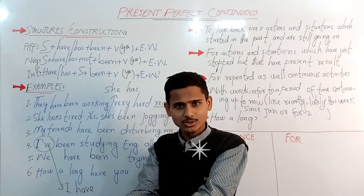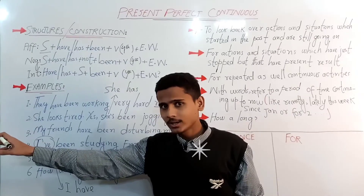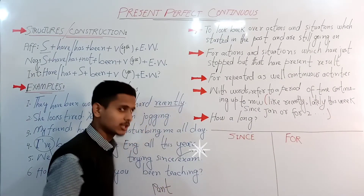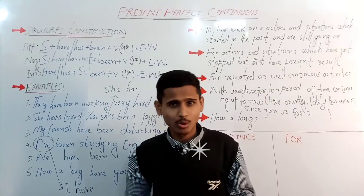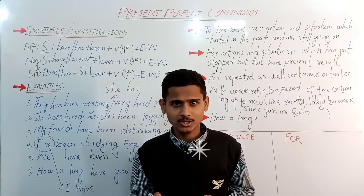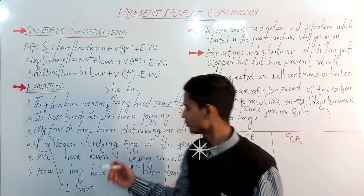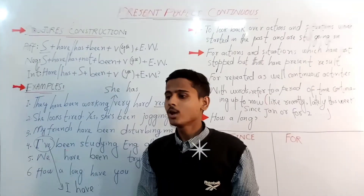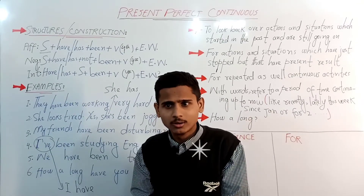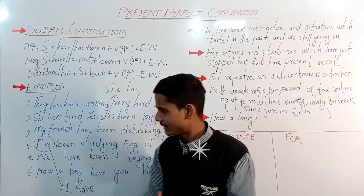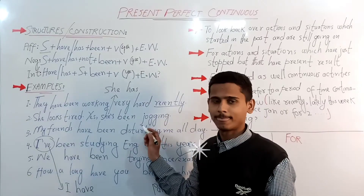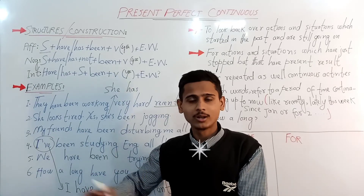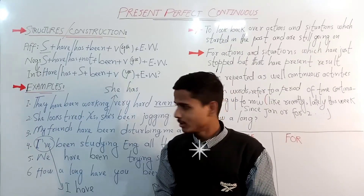For the second usage, the action is no longer in progress, it has stopped — but we still use present perfect progressive. The example is: 'She looks tired.' Someone is talking to a second person about a third person — she is panting, meaning she is taking long breaths after hard work or running. The reply is: 'She has been jogging,' emphasizing her extended jogging activity.